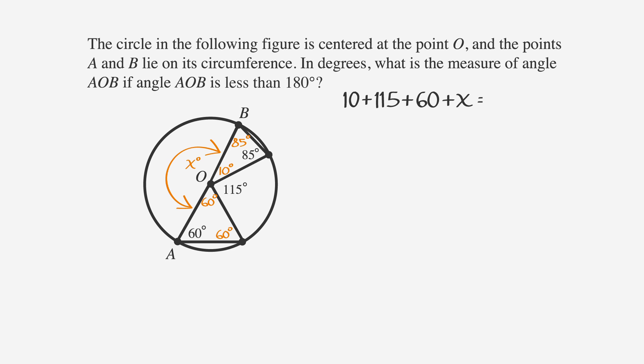We know that all the angles in the circle need to add up to 360 degrees, so 10 + 115 + 60 + X = 360, which simplifies to 185 + X = 360. Now subtract 185 from both sides and find that the smaller angle AOB equals 175 degrees.